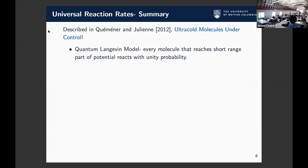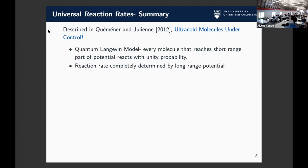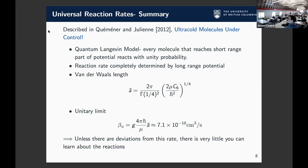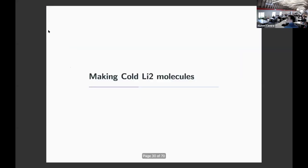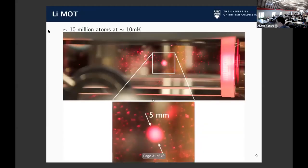There hasn't been a lot of progress in understanding molecular loss for a long time, and now recently there has been quite a bit. To summarize: there's this quantum universal model, which assumes a black hole that takes everything away. You completely determine your reaction rate by the long-range potential, relate that to some van der Waals length, and get some unitary limit. Now let's move to our experiment.